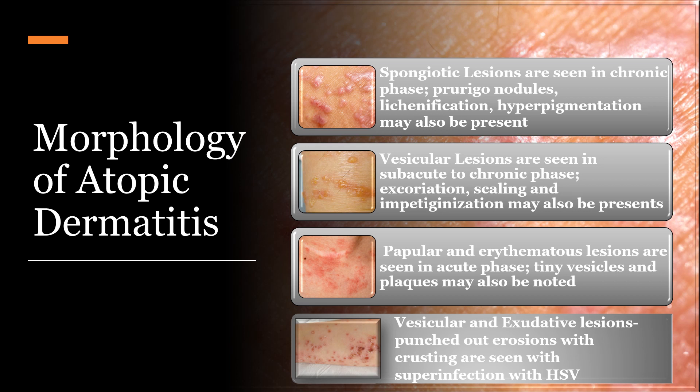Morphology of atopic dermatitis. Spongiotic lesions are seen in the chronic phase, with prurigo nodules, lichenification, and hyperpigmentation also potentially present. Vesicular lesions are seen in subacute to chronic phase, more circumscribed to the subacute phase, with excoriation, scaling, and impetiginization also possible. Papular and erythematous lesions are seen in the acute phase, with tiny vesicles and plaques also noted. Vesicular and exudative lesion complex with punched-out erosions and crusting is usually seen with HSV superinfection.